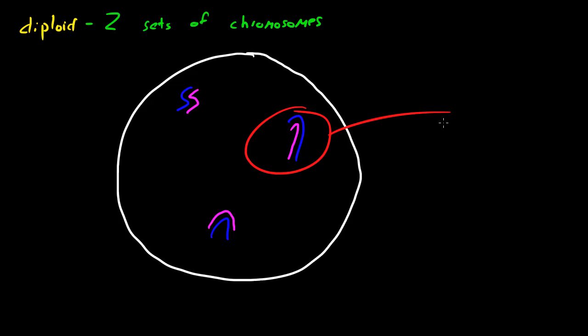So, whenever we have two chromosomes that match each other, one from your mom and one from your dad, we call these homologous chromosomes.